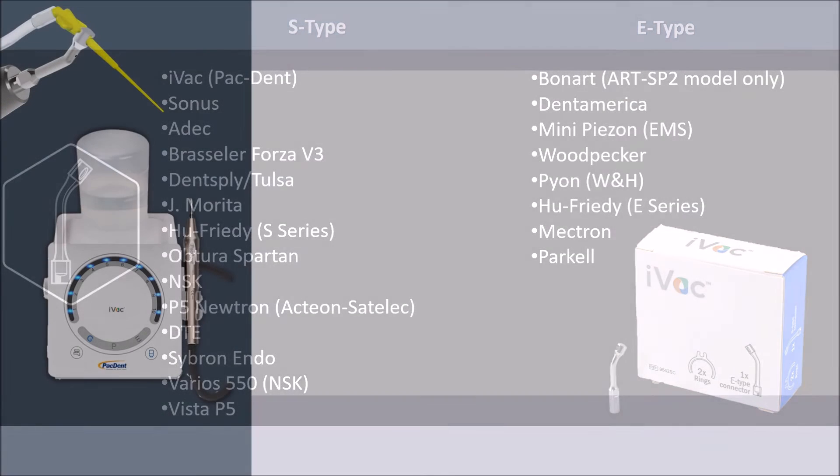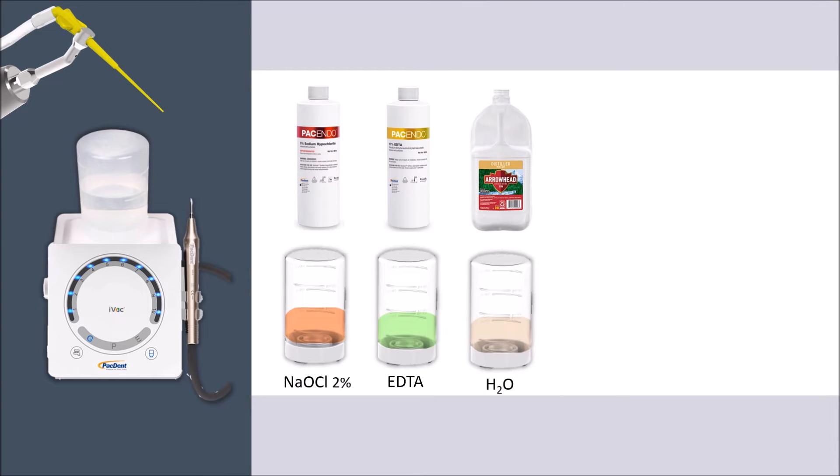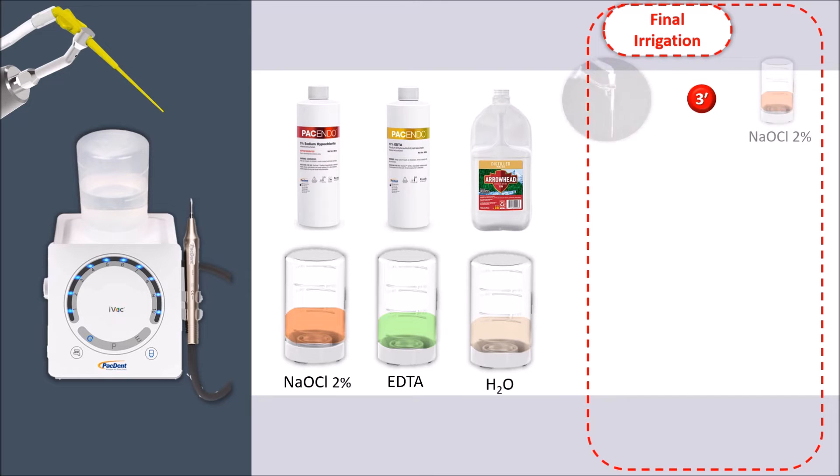The suggested protocol for final irrigation with the iVac uses sodium hypochlorite 2%, EDTA, and distilled water. After finalizing the instrumentation, activate and flush with the iVac for three minutes with sodium hypochlorite.